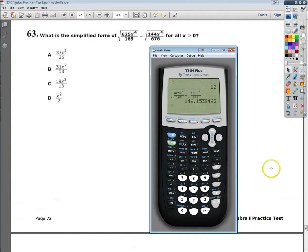So I'm going to try to get that answer for one of my answer choices. So I'm going to type in the one that I think the actual answer is. So 19 x squared over 13. And if I convert that into a decimal,